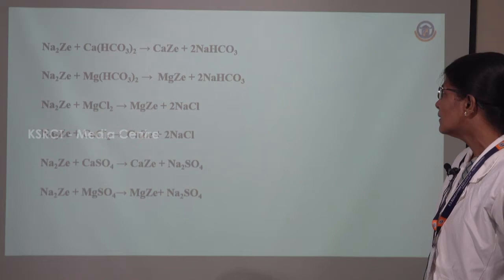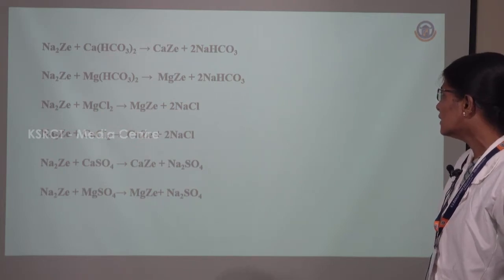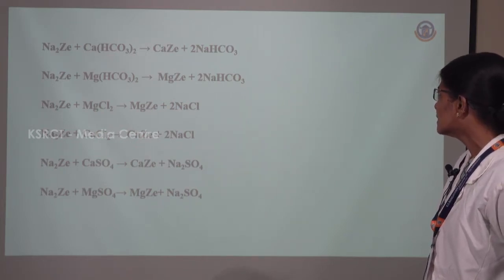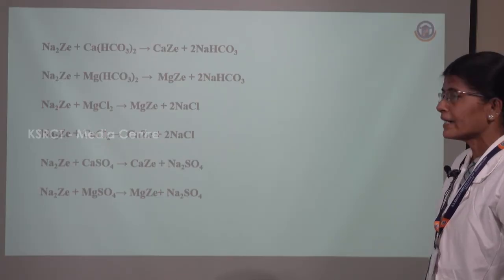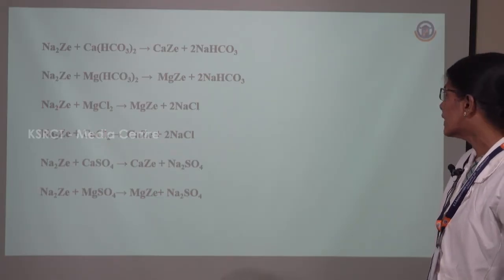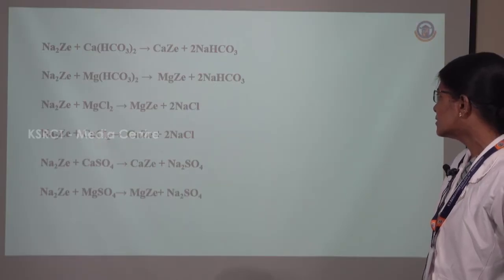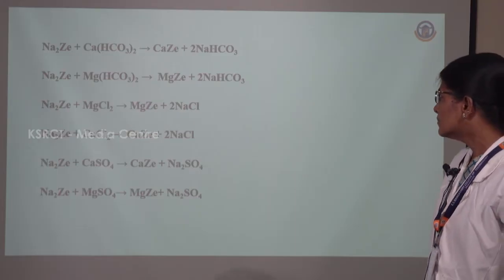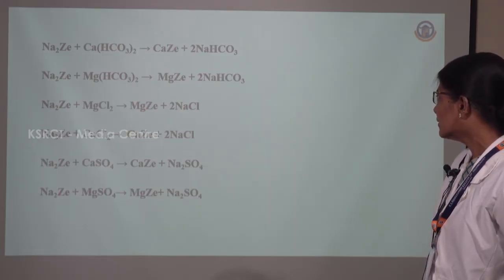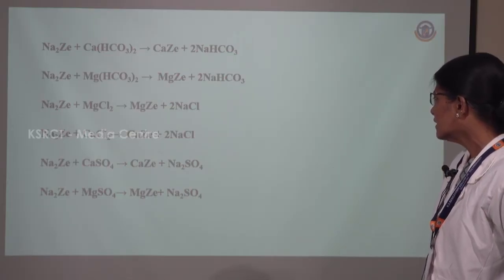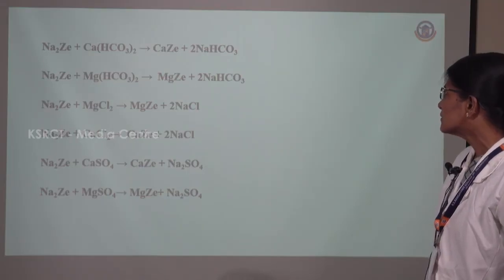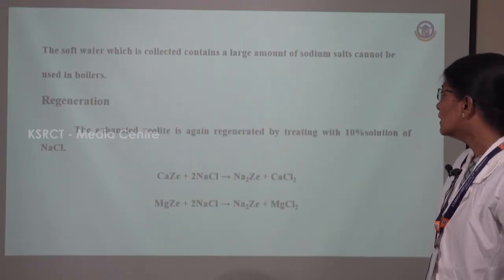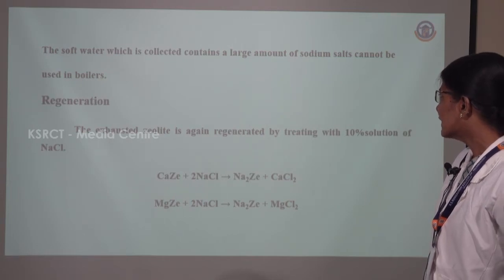Sodium zeolite plus calcium bicarbonate gives calcium zeolite plus sodium bicarbonate. Sodium zeolite plus magnesium bicarbonate gives magnesium zeolite plus sodium bicarbonate. Sodium zeolite plus magnesium chloride gives magnesium zeolite and sodium chloride. Sodium zeolite plus calcium chloride gives calcium zeolite and sodium chloride. Sodium zeolite plus calcium sulphate gives calcium zeolite plus sodium sulphate.